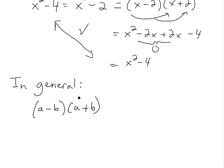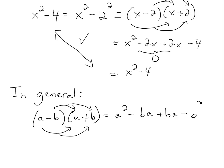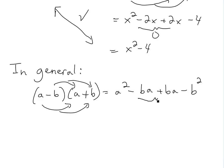Now if we look at the general case, pick random variables a and b. If we expand a minus b and a plus b, foil this out, we get a squared minus ba plus ba and then minus b squared right here. And then this cancels, so we're left with a squared minus b squared. There's our difference of squares formula.